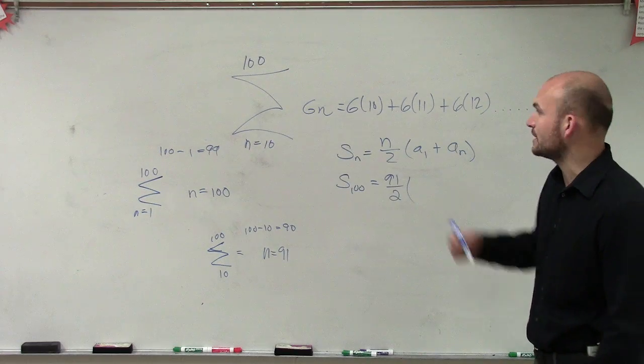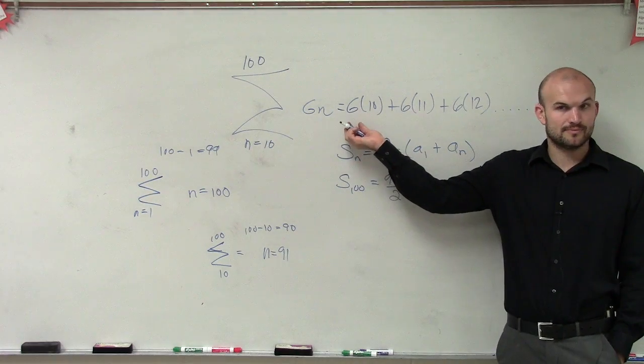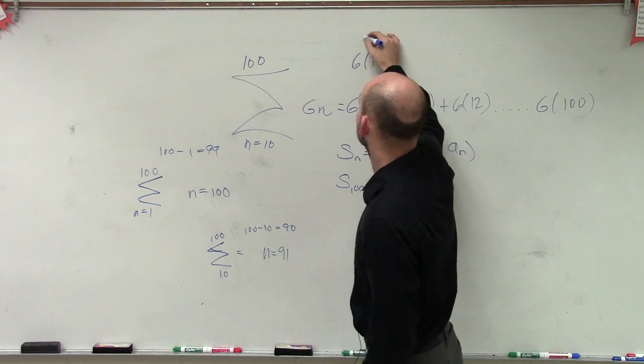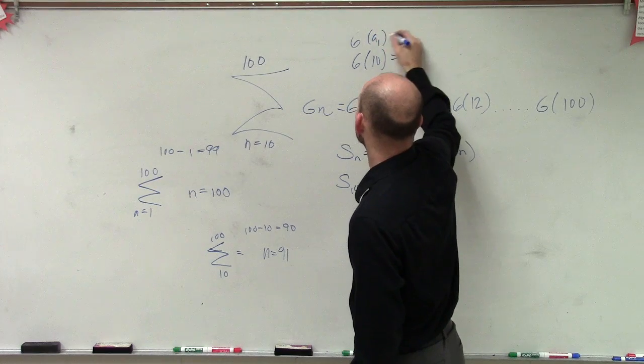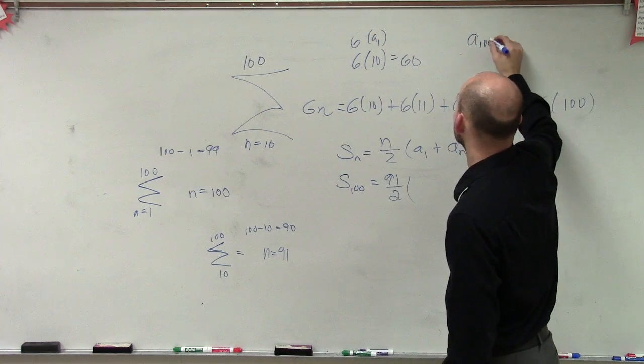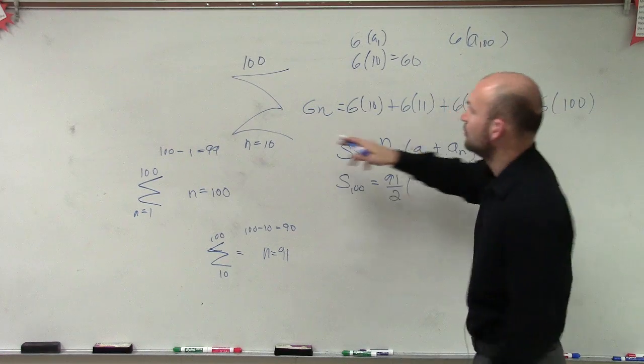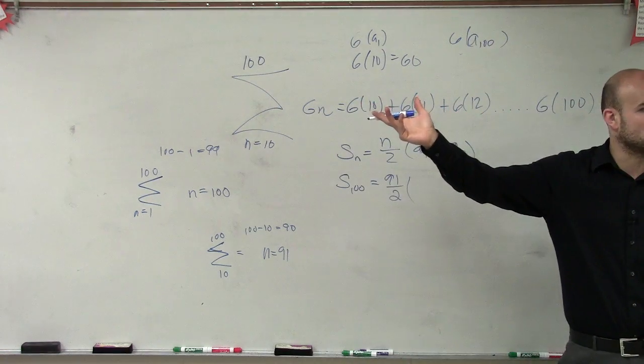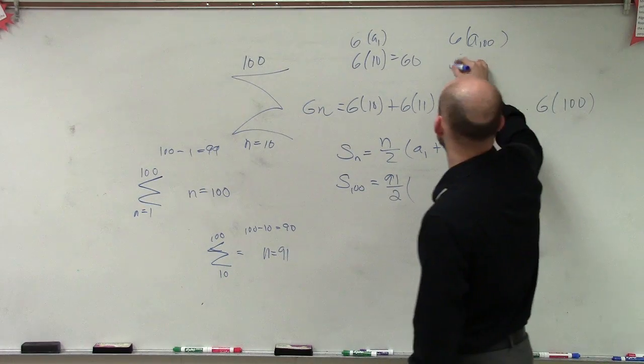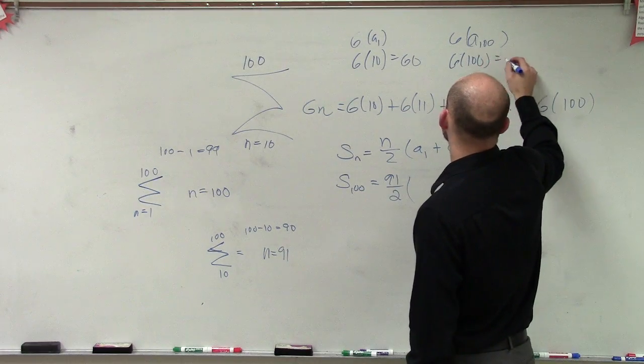Now we need to figure out what a sub 1 is. Well, a sub 1 is going to be this first term, right? So we do 6 of 10, which is 6 times a sub 1, which equals 60. And then we do a sub 100, 6 times a sub 100. Well, a sub 100 is going to be our last term, our 100th term, or our 91st term, which would be 100. So it would be 6 times 100, which equals 600.